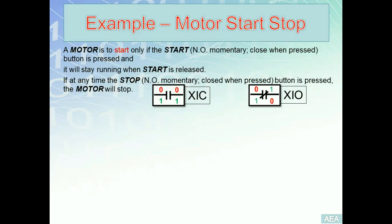The first term is 'start', which refers to the state of the motor — the output we want to achieve. The start switch is normally open, meaning it reads zero into the PLC memory when not pressed, and closes when pressed. It will stay running when start is released. The stop switch is also normally open, closed when pressed, and the motor will stop.